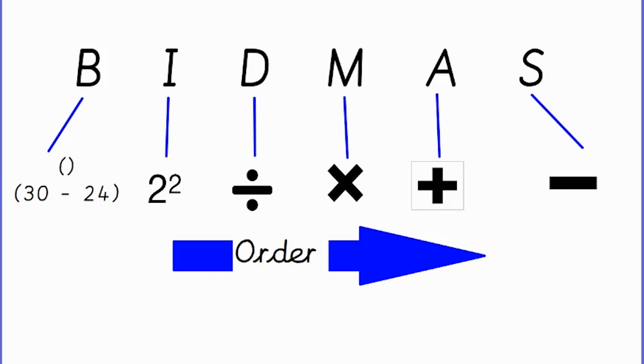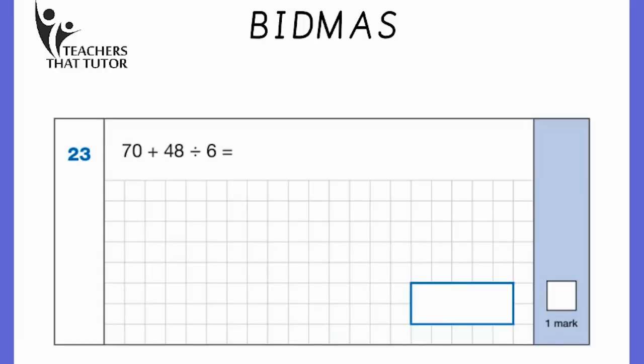So let's have a look at some examples from the recent SATS papers. This question is from the 2023 paper, so last year's paper, and you can see we've got 70 plus 48 divided by 6. However, it's important that we remember BIDMAS so we know which part of this question we must do first.